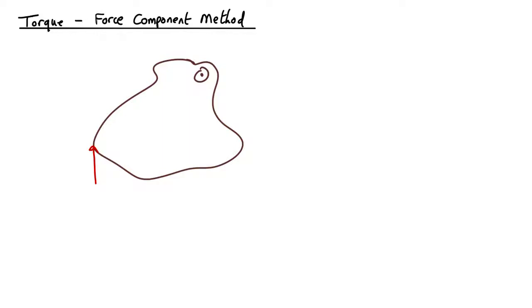So the perpendicular distance method we've just said is you work out an imaginary line through the force vector, and you drop a perpendicular onto it, and it's the strength of the force times this distance here.